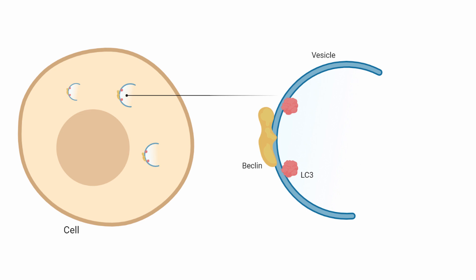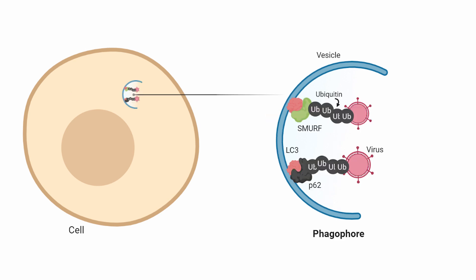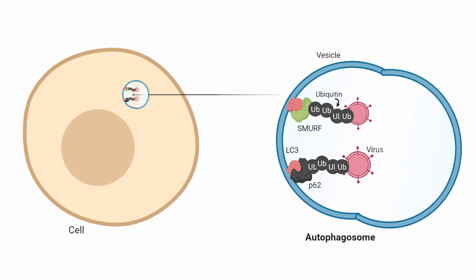It does so by undergoing its classic autophagy mechanisms, meaning it begins by forming a piece of a vesicle, with key autophagy proteins like Beclin on the outside and LC3 on the inside. Then it forms a phagophore, meaning the LC3 protein found inside the autophagic vesicle is bound by key proteins like P62 and SMURF, which in turn are attached by ubiquitinated viral proteins. To simplify, the viral proteins invading the cell are often tagged by molecules known as ubiquitin, and once tagged, they are attached to the forming autophagy vesicle. Next, the vesicle elongates and closes, trapping the viral proteins in the now-called autophagosome.